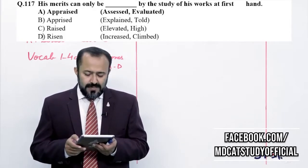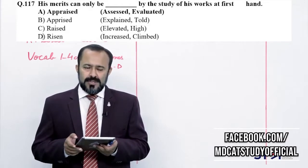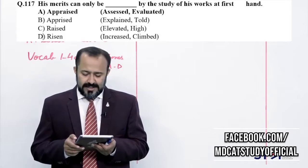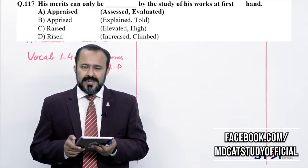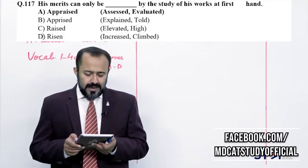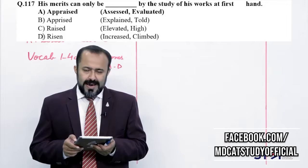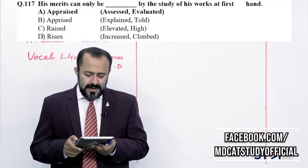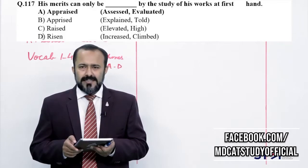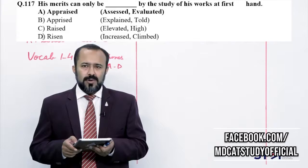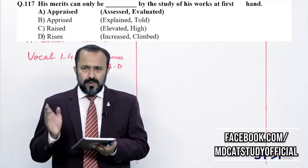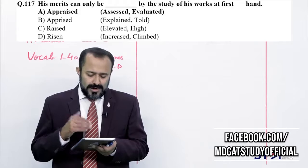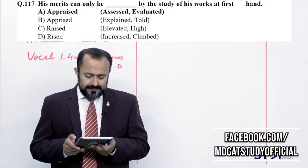Question 117: 'His merits can only be ___ by the study of his work.' Merit کو dash کرنا ہے — positive word ہی ہوگا اور study of his work سے کر سکتے ہیں۔ Appraise کا مطلب ہے analyze کرنا — merit کو appraised کیا جا سکتا ہے۔ Charlie (raised) — merit کو raise کرنے کی collocation نہیں ہے۔ Delta (risen) — grammar کے point of view سے غلط ہے؛ rise خود اٹھنا ہوتا ہے۔ تو Alpha (appraised) is the correct answer.